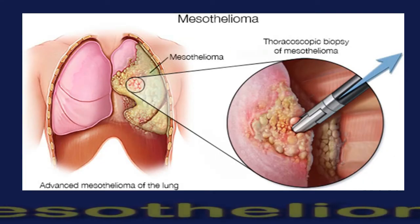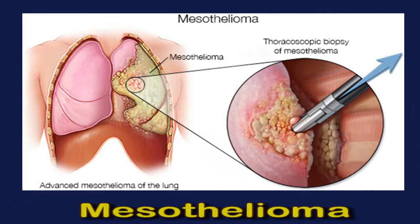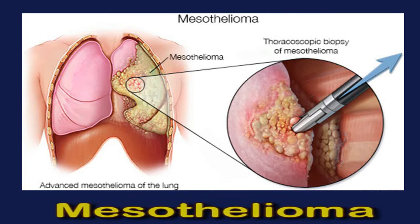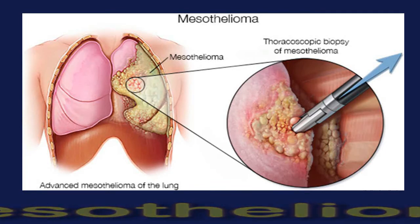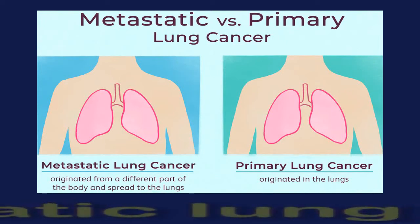Mesothelioma is a type of lung cancer that usually develops as a result of long-term exposure to asbestos. The symptoms of mesothelioma are similar to those of other types of lung cancer. However, a 2015 study found that 14.3 percent of people with mesothelioma had shoulder pain as a first symptom.